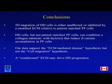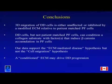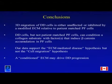In conclusion, 3D migration of Dupuytren's disease cells is either unaffected or inhibited by the factors we've tested. Dupuytren's disease cells — but not their patient-matched palmar fascia controls — can condition a collagen substrate with factors that induce beta-catenin accumulation and change stress fibre actin condensation in palmar fascia cells. Our data support an ECM-mediated disease hypothesis but not the cell migration hypothesis, and a conditioned ECM just might drive Dupuytren's disease progression.